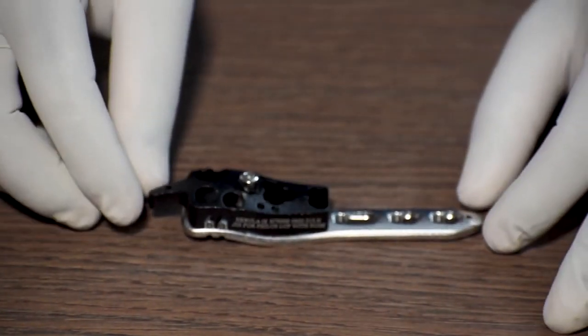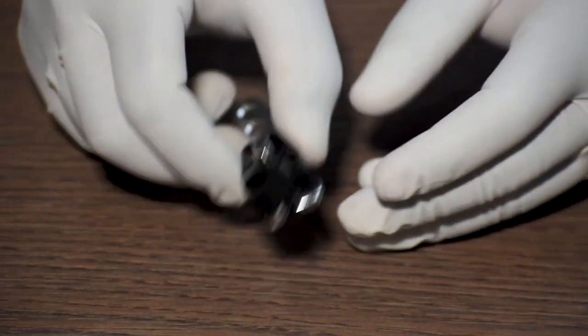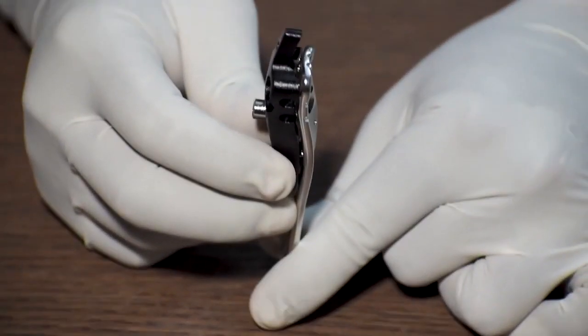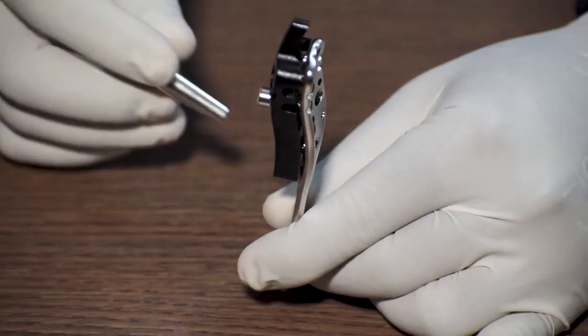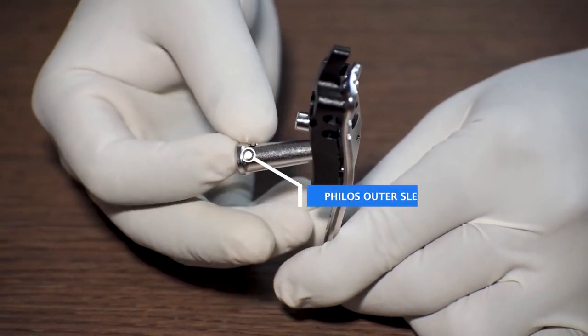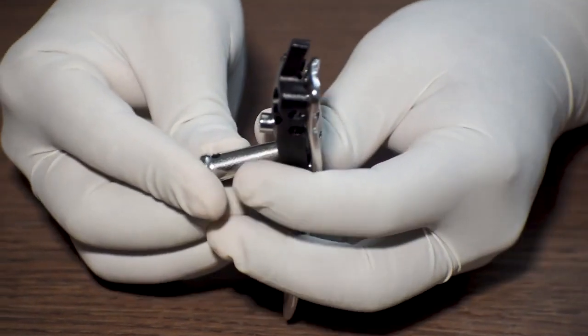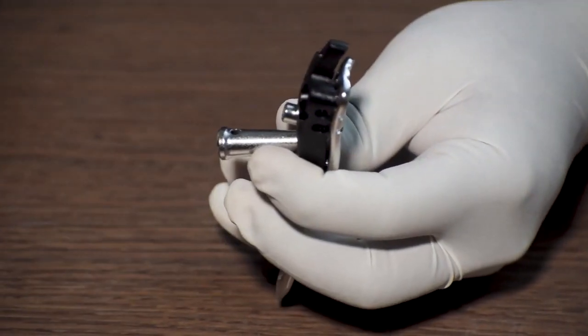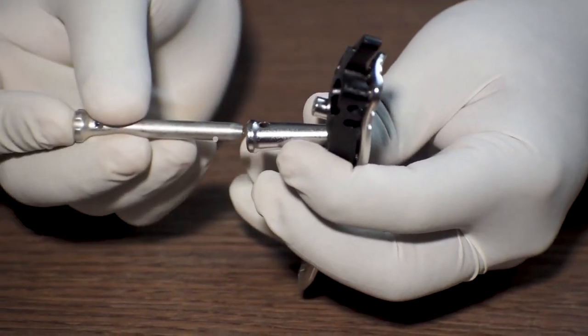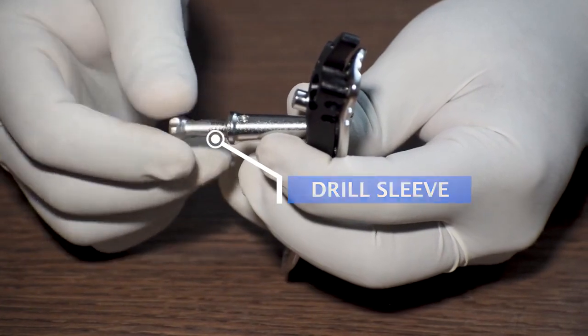Now let us check out the use of this device. First we will fix the Phyllos outer sleeve in the jig. Then we will insert the drill sleeve inside the outer sleeve.